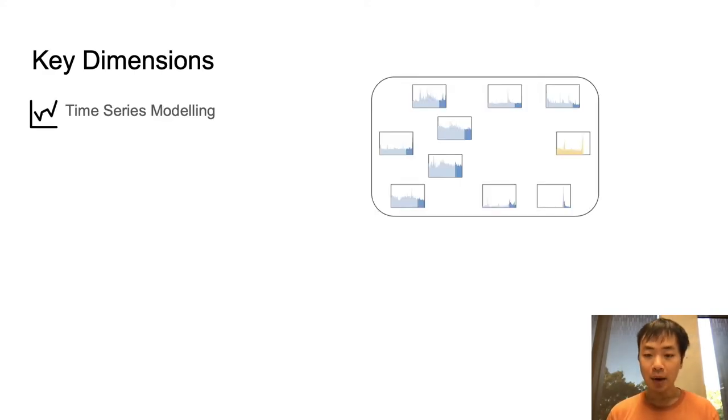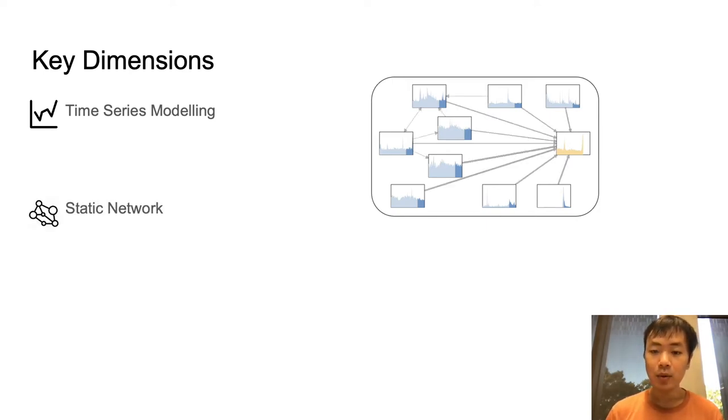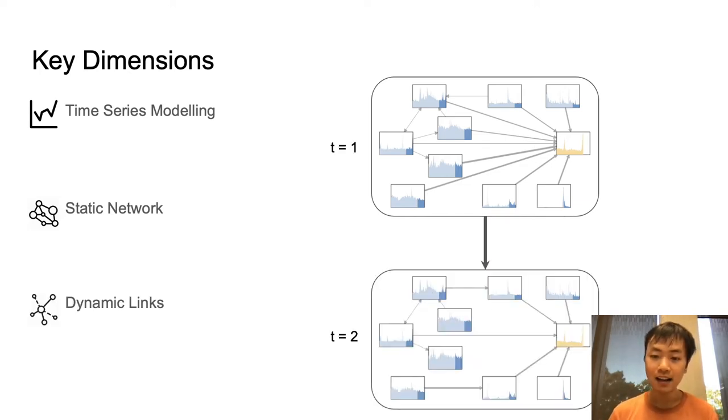When we study networks of time series, there are three dimensions that we need to consider. The first is that we need a way to model the time series inside each node. And then we need to be able to represent the graph structure that sits on top of these time series. And finally, nodes and edges in our graph can appear and disappear over time. For example, a video might get recommended on one day, but not on another day. So we need to represent dynamic networks of time series.